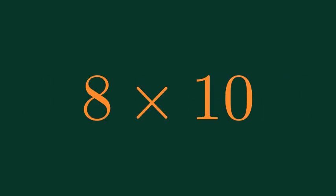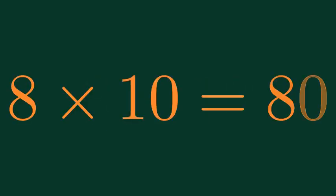What is 8 times 10? 8 times 10 is equal to 80.